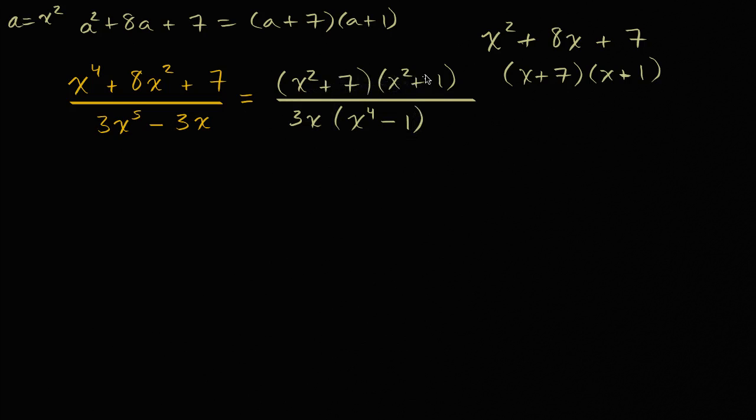And so far, this doesn't seem too helpful. I don't see an x to the fourth minus one, or a 3x in the numerator, but maybe I can factor this out further, x to the fourth minus one. And that's because it is a difference of squares.